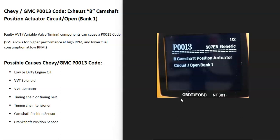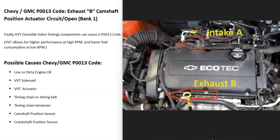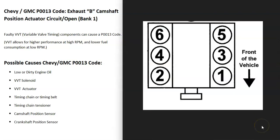Engines have several components that adjust the timing inside the engine, and many modern engines have what's called variable valve timing. This includes the actuator that the timing chain rides on and some solenoids. There are two cams — one for the intake where air goes into the engine and one for the exhaust where air is leaving. On a four-cylinder, you'll have two variable valve timing solenoids: the one labeled A is for the intake and the one labeled B is for the exhaust.